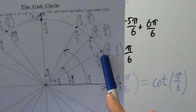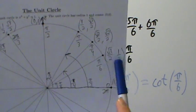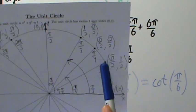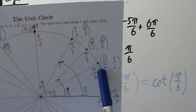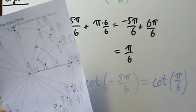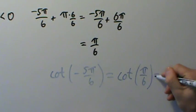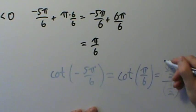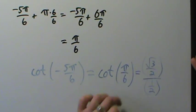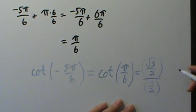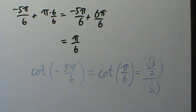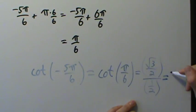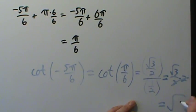Cotangent is the x-coordinate divided by the y-coordinate for the point on the unit circle — that is, cosine divided by sine. So the cotangent of π over 6 is (√3/2) divided by (1/2). Dividing by 1/2 is the same as multiplying by 2, so the 2's cancel and we get √3.